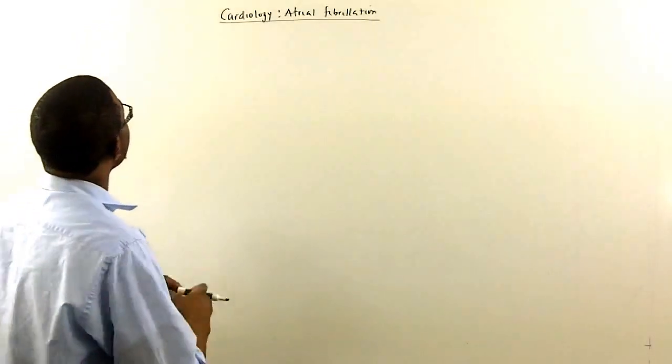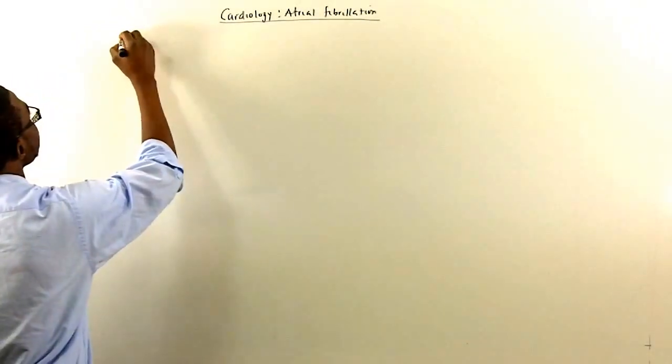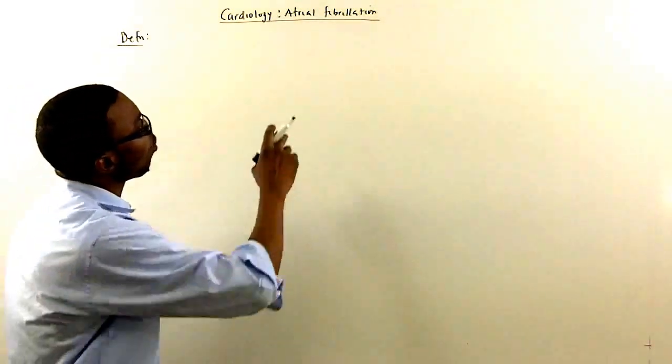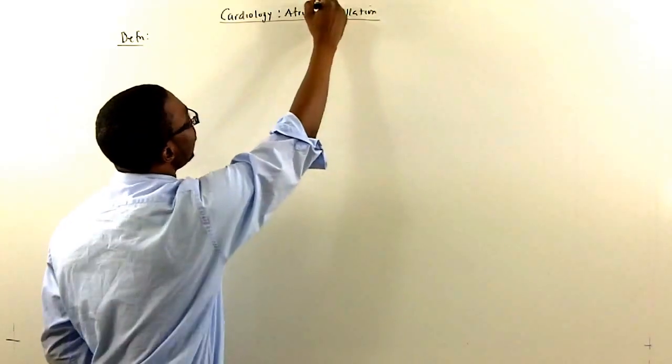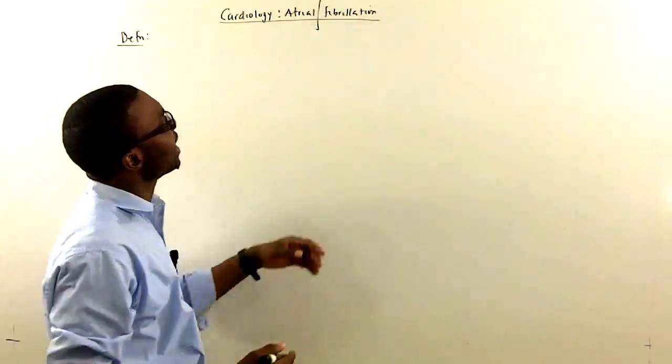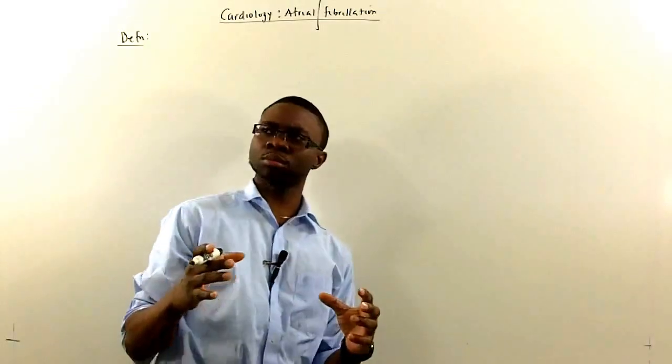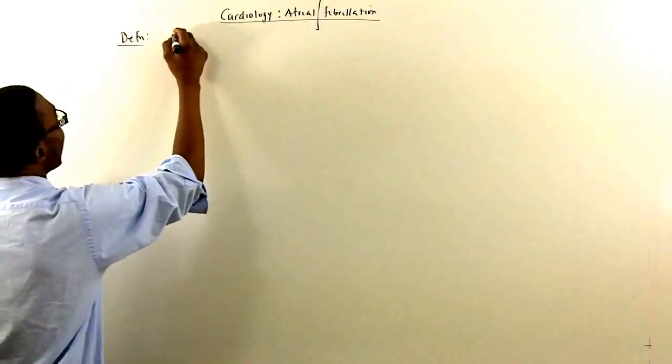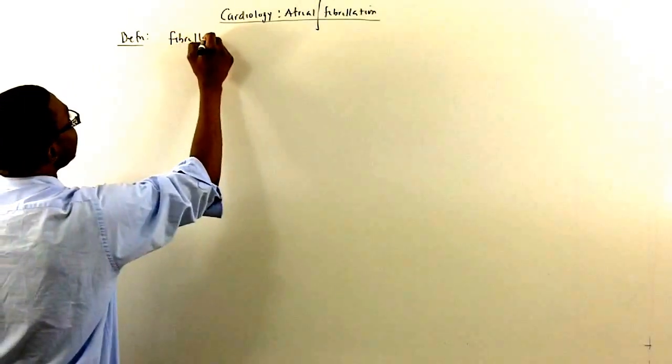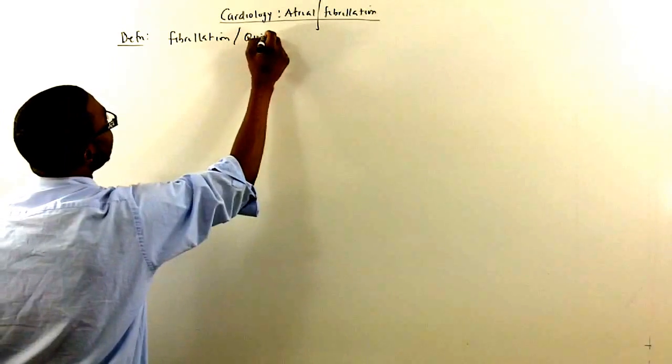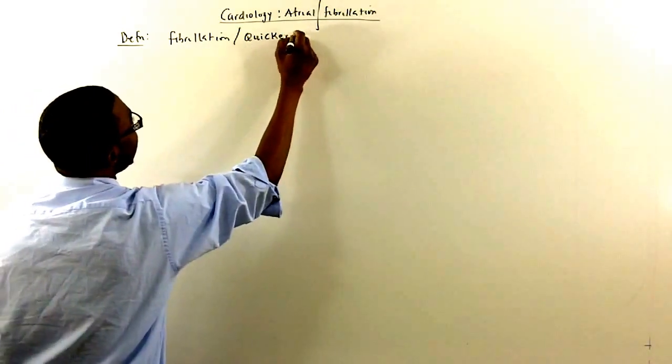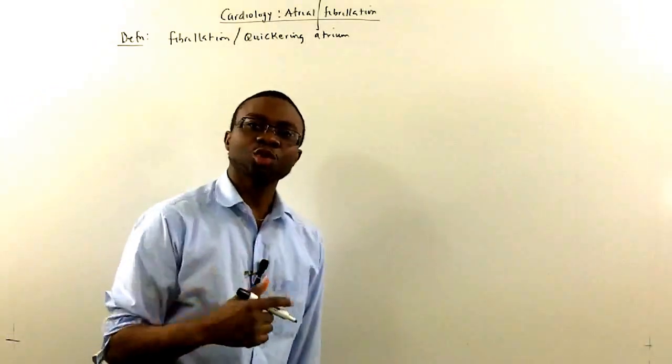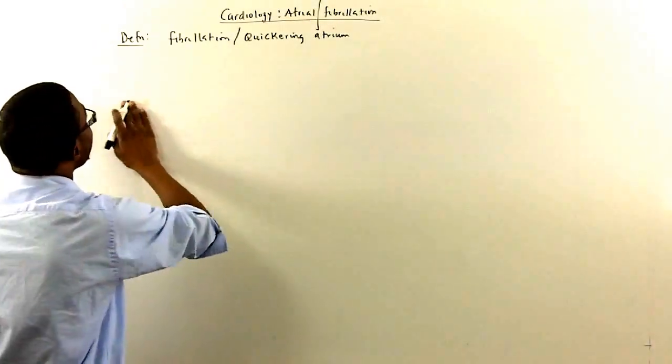So the first thing we want to talk about is what is atrial fibrillation? Definition. Well, in order to actually talk about what atrial fibrillation means, let's break the word into two. Something is happening in the atrium and it's fibrillating. We'll find out at the end of this lecture. I'm going to just say it's a fibrillating or quivering atrium. What does that mean? Let's draw out the structure of the heart and see what actually happens inside the human heart.